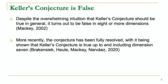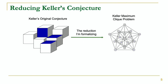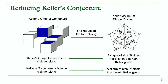So how do we approach this problem? How have people come to these conclusions? The critical move that's been made historically to tackle this problem has been a reduction from the original infinite geometric problem to a finite graph-theoretic problem. Specifically, the reduction says that if Keller's conjecture is true in D dimensions, then a clique of size 2^D does not exist in a certain Keller graph; and if Keller's conjecture is false in D dimensions, then a clique of size 2^D does exist in a certain Keller graph. This is the main reduction that I formalized.